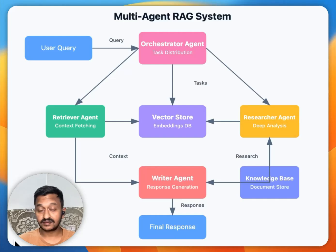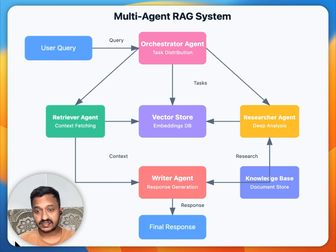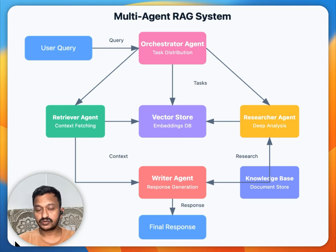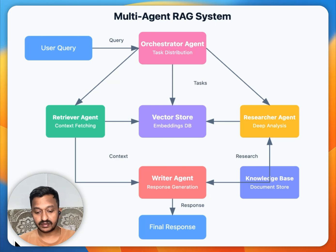Multi-agent applications are popular for all the right reasons, as they excel at complex tasks requiring diverse expertise. In a multi-agent RAG system setup, a user query — which can be a very complex problem — gets subdivided, and the orchestrator agent assigns tasks to different agents: a retriever agent, a research agent, and a writer agent, with a vector DB storing all required information. This is how different AI agents come together to solve complex problems, which is why multi-agent applications are in high demand today.